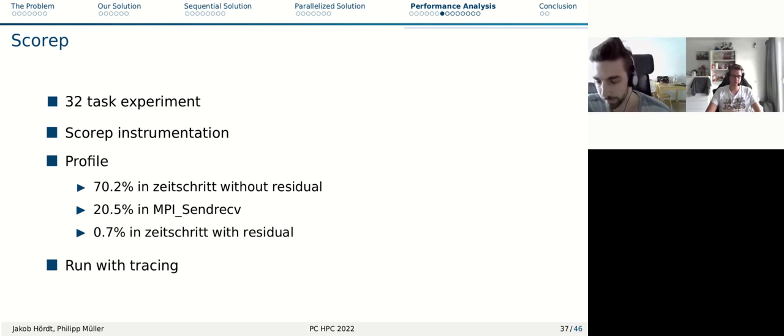Then we come to a little bit of profiling and tracing with Vampir. For this, we conducted a 32-task experiment, instrumented the program with SCORE-P, and had a quick look at the profile. As you can see, we spent 20% of our time in MPI send-receive currently, which is pretty bad. This profile allows us to determine a tracing filter or estimate the size of the tracing. We found out that we don't need to do any filtering because the trace will only be a few megabytes.